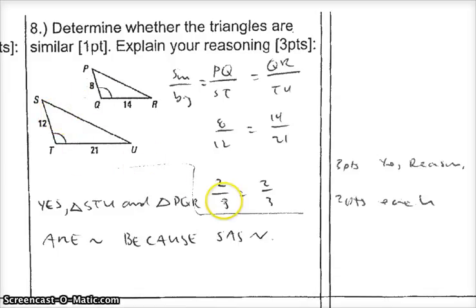To go from the big to the small is two-thirds. If you went from the small to the big, if you flip it, that would be 3 over 2. Do the same thing on the other side. Q-R over T-U. So that gives me 14 over 21, and if you reduce that, it gives you two-thirds. Because they're both two-thirds, that means the scale factor is two-thirds. Now I can say S-A-S.